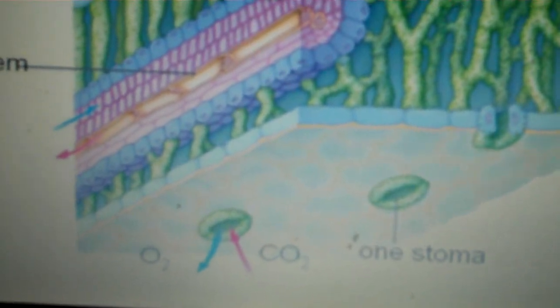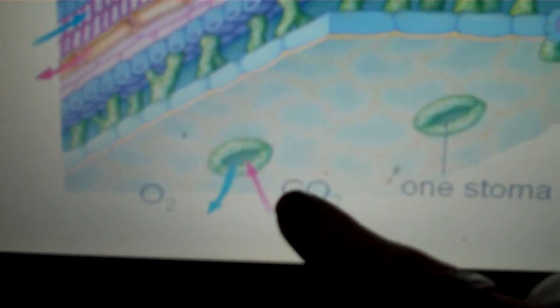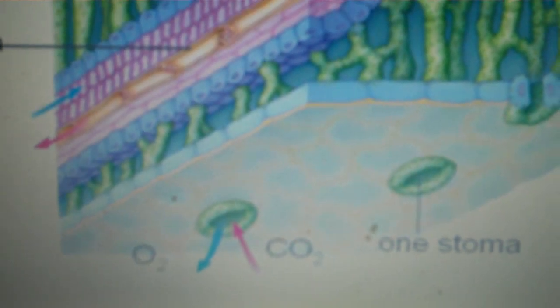Carbon dioxide is going to diffuse into the plant leaf through an opening called stomata and the oxygen can diffuse out also through the stomata.